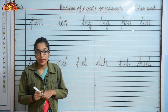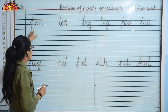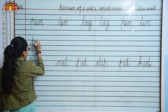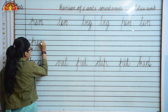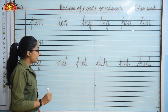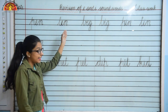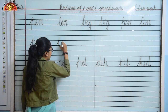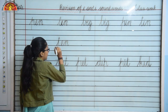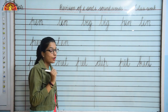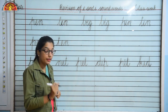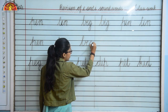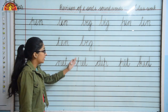Now let's start writing. So everyone look here. Our first E sound word is P, E, N — Pen. Write neatly everyone. Now let's write T, E, N — Ten. Next E sound word is B, E, G — Beg. So write everyone. It's Beg.